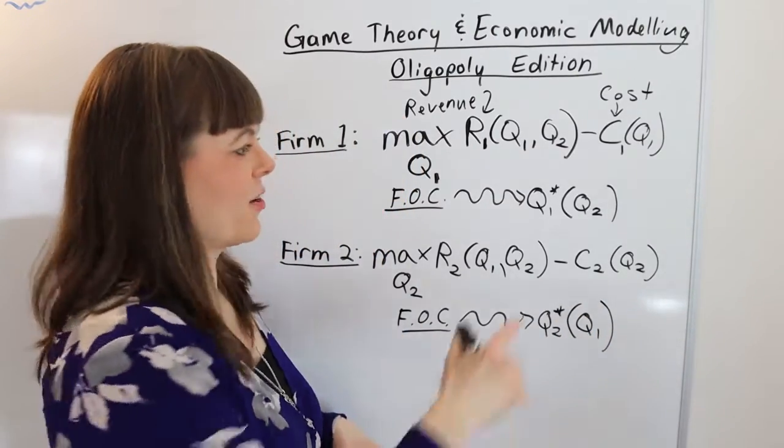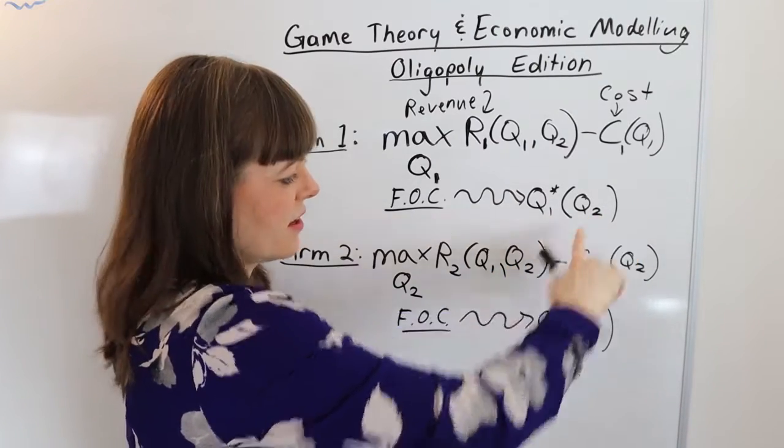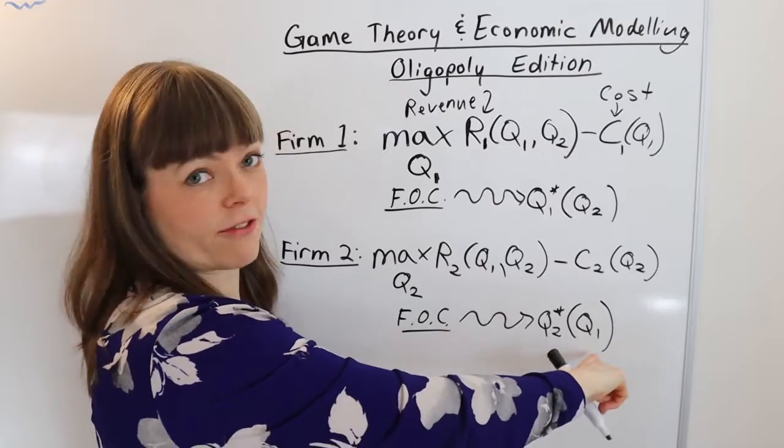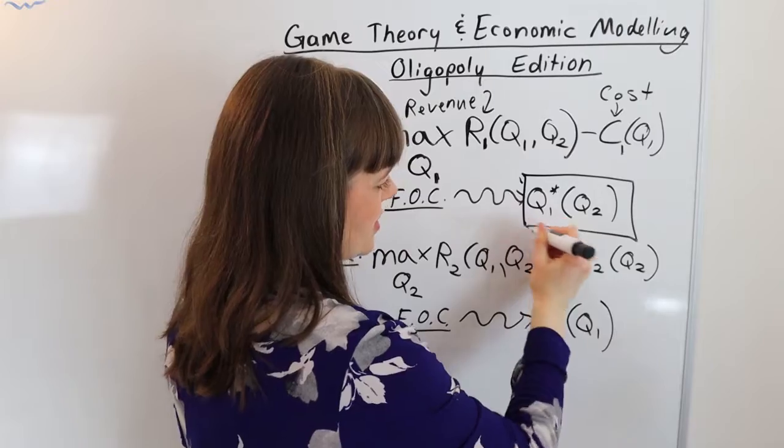Now you notice something interesting here which is firm one's choice is a function of firm two's choice. Firm two's choice is a function of firm one's choice and so these are actually going to be best response functions.